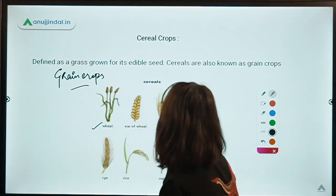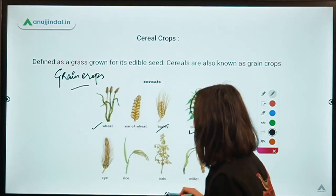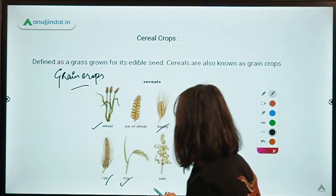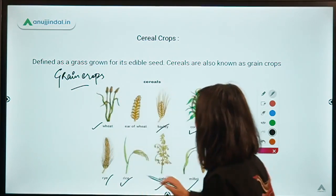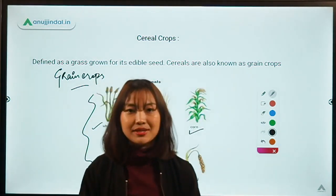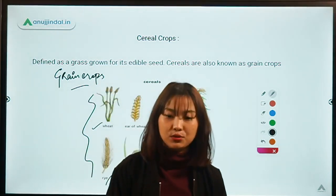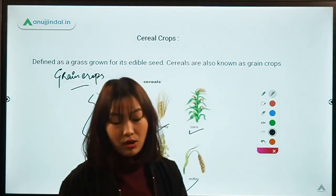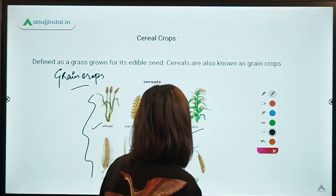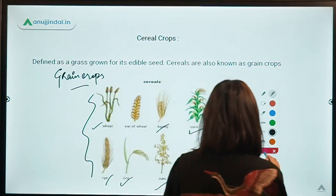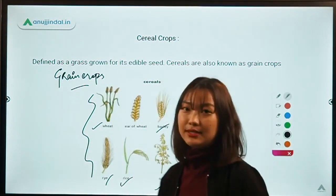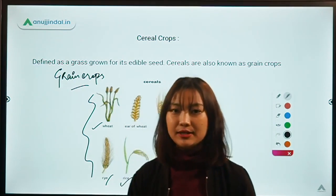Examples of cereal crops include barley, corn, rice, rye, oats, and millet — all of these belong to the cereal crops. India is also the largest producer in cereal crops.